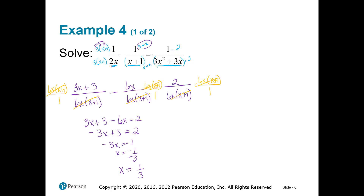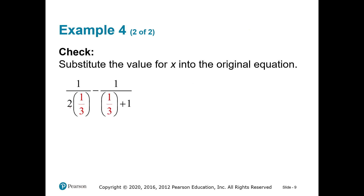Remember, we cannot let any of these denominators equal zero. We need to check and make sure that when I plug in one-third into the first denominator, I don't get a zero — and I don't. I just get 1 over two-thirds, which is one of those complex fractions. That's 1 divided by two-thirds, which means 1 times 3 over 2, which gives us three-halves for fraction number one.